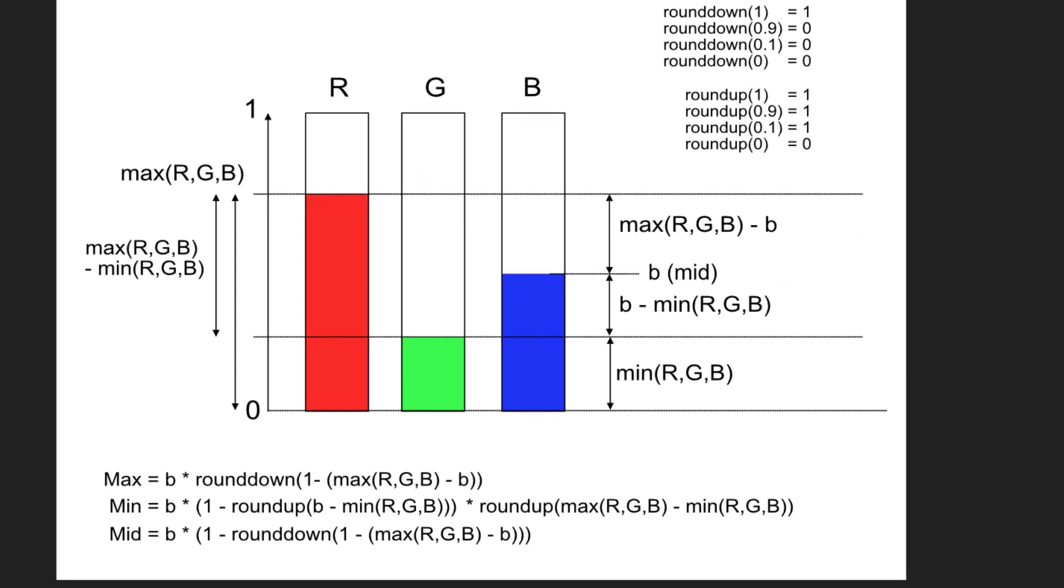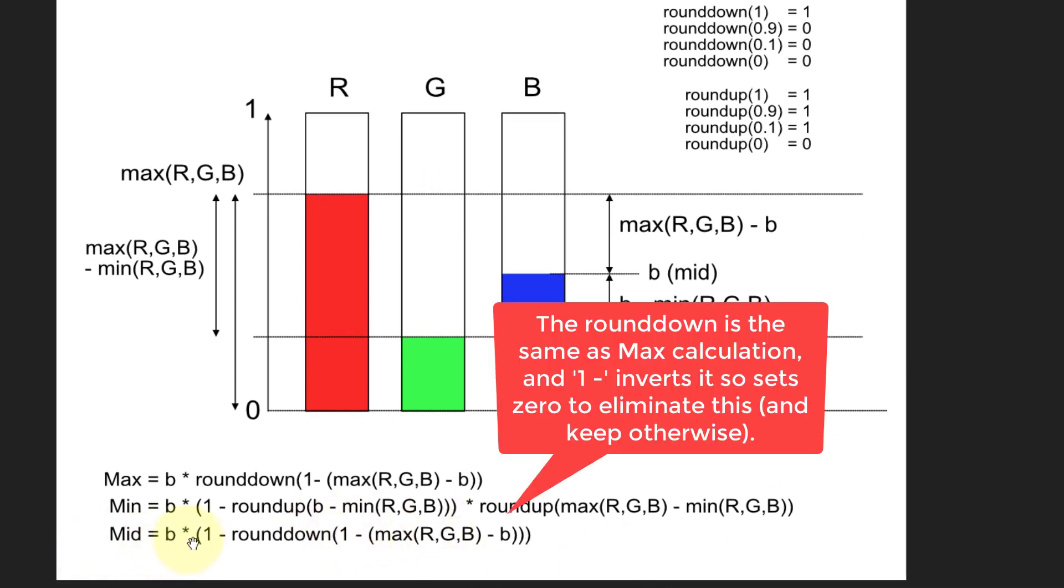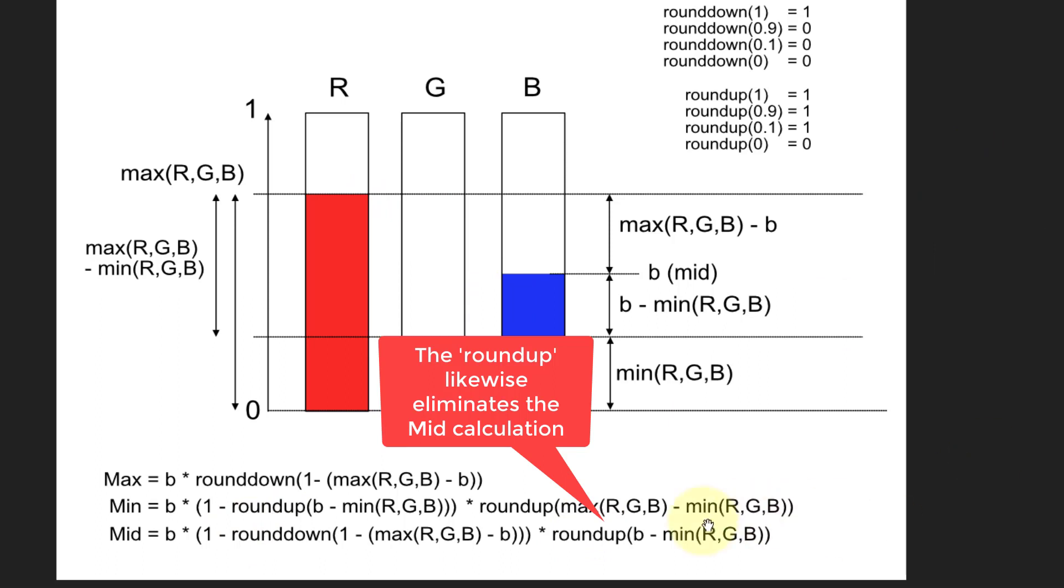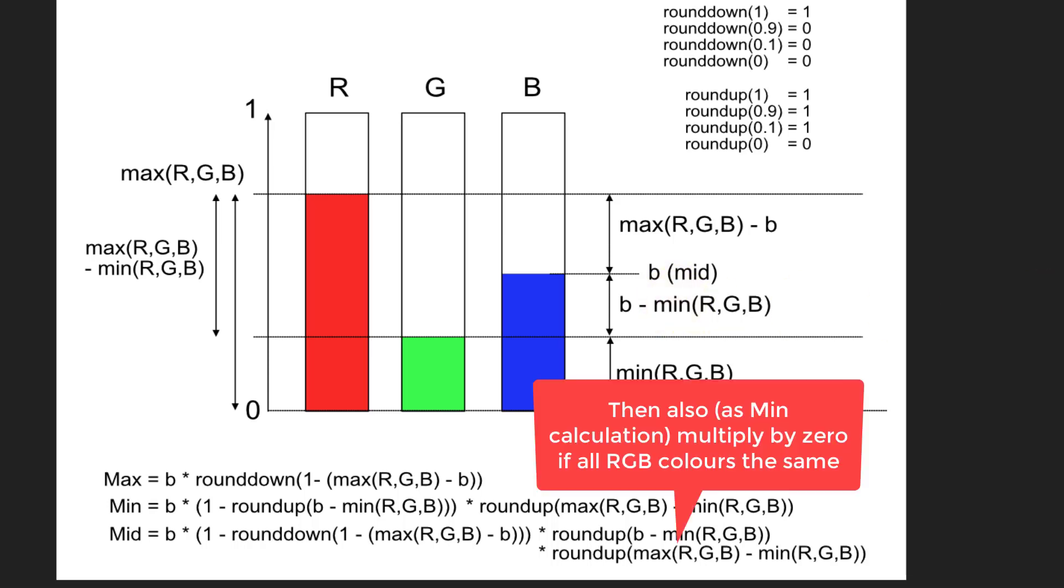And then the mid, you start off, you've got to be, you multiply this by a round down, but also you've got, because effectively here, you're saying not the top one and not the bottom one. But then you've also multiplied by the round up here. So this is counting for this gap. This one is counting for the bottom gap. And also you've got to count for that, whether you get the situation of it being monochrome and all the same.